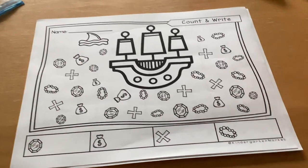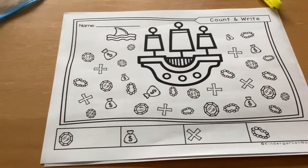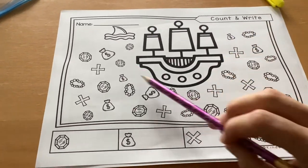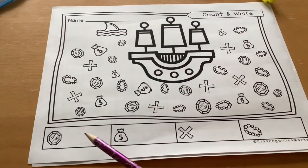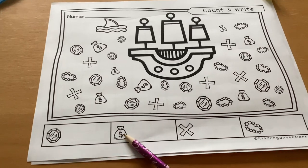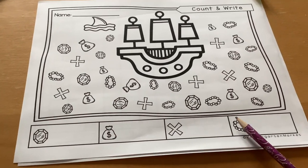This is the Count and Write Center for graphing and tallying. All over this pirate ship there are different symbols: a window, a coin bag, an X, and a necklace.